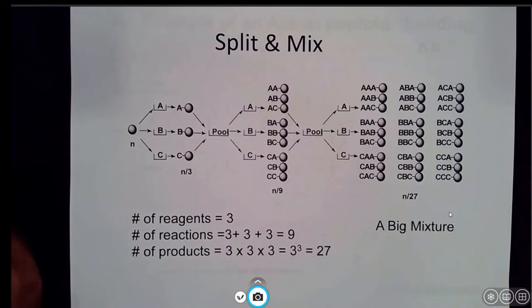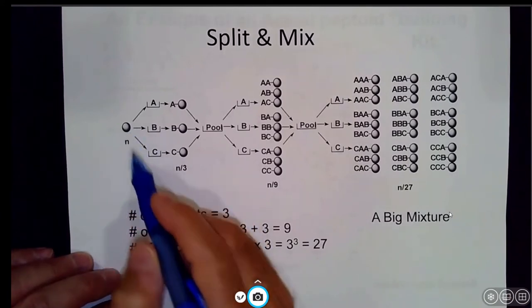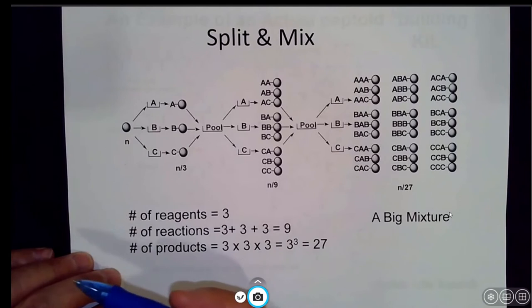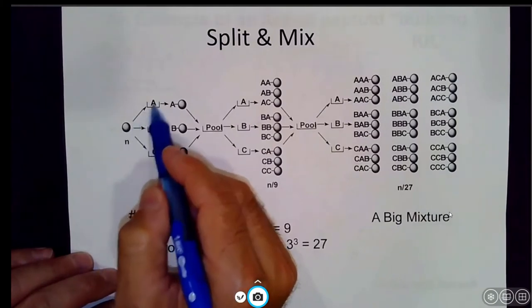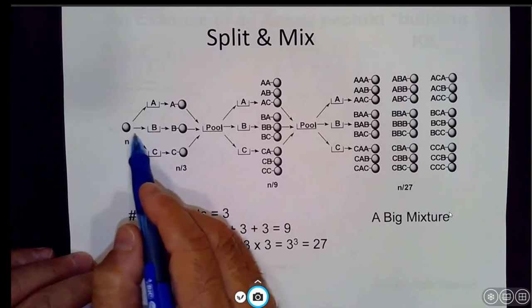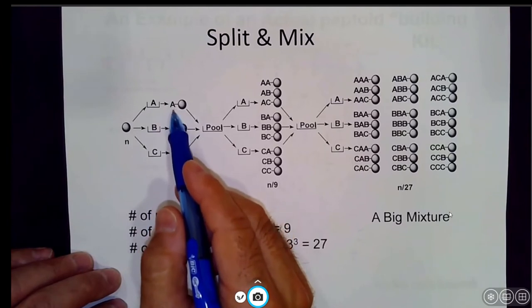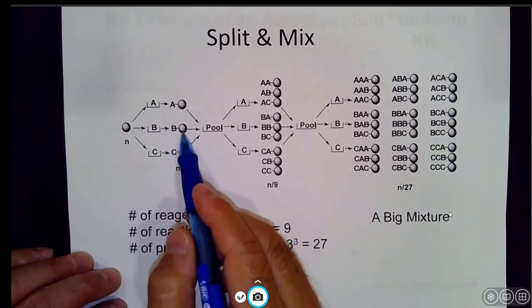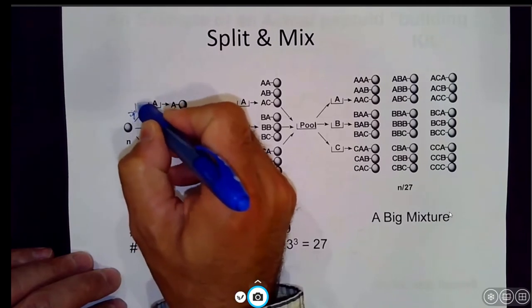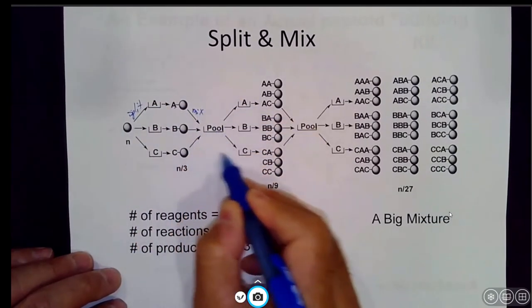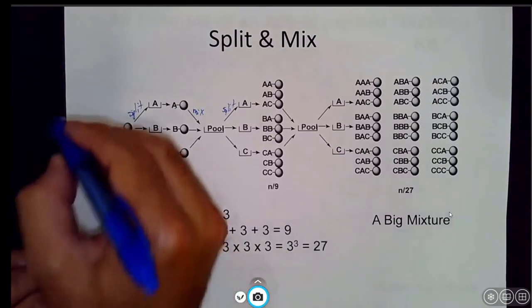So what are these beads? These beads are essentially these little structures that are shown here. This is called the split and mix method. Essentially what you do is you take your pool of beads, kind of like what I just showed, and then you derivatize them. You do reaction A, for example, and then reaction B, reaction C. You literally split them up, and then you can see that reagent A is now attached to the bead, reagent B is attached to the bead, reagent C is attached to the bead. You then mix them together. This is the split part at the beginning, and then you mix them back together to make another pool. Then you split them again and then you do the same derivatization reactions.